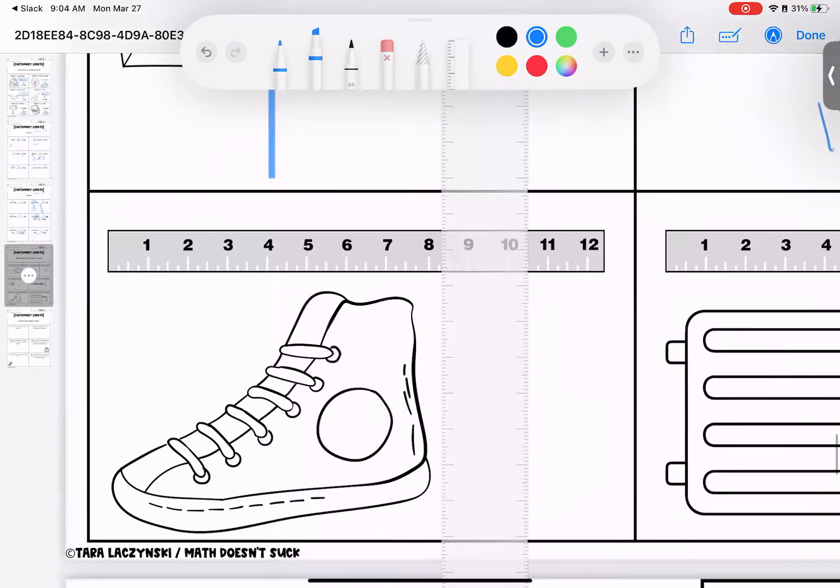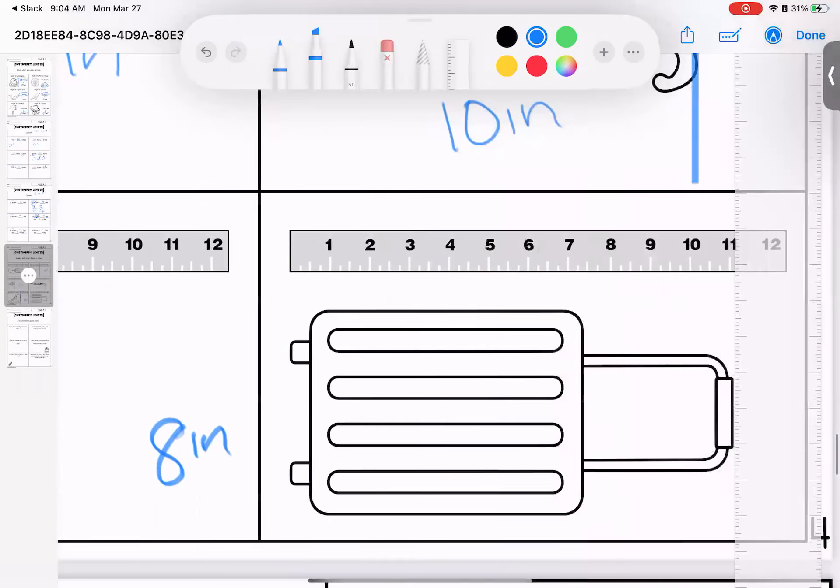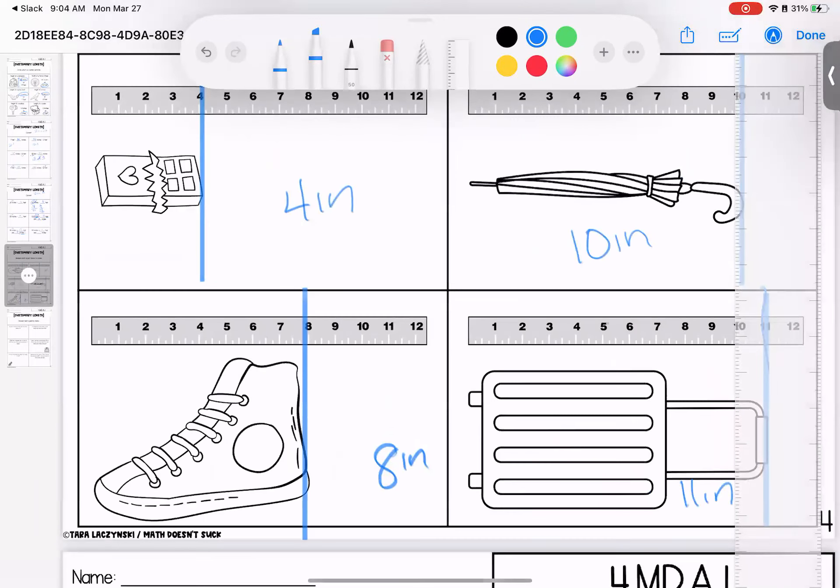Down to the shoe. 8 inches. And then over to the suitcase. 11 inches. Any questions on these? Bring them with you to class.